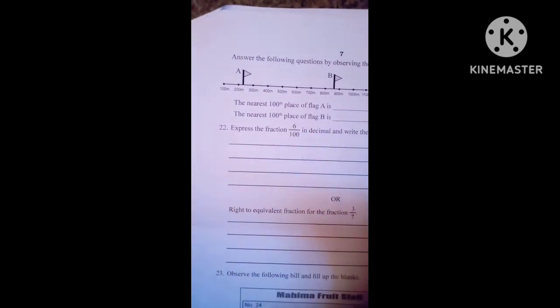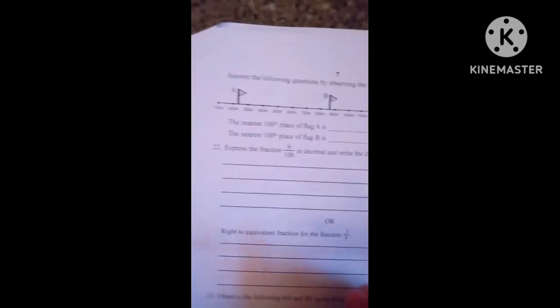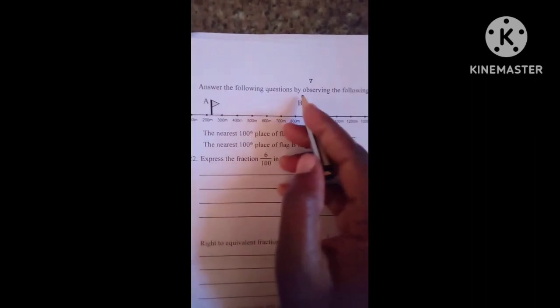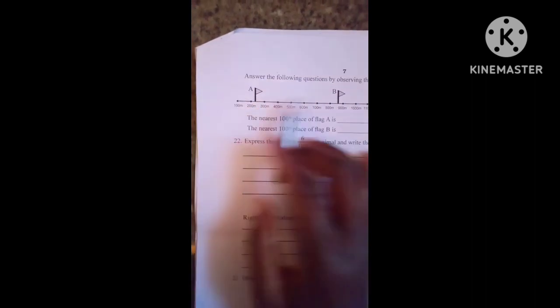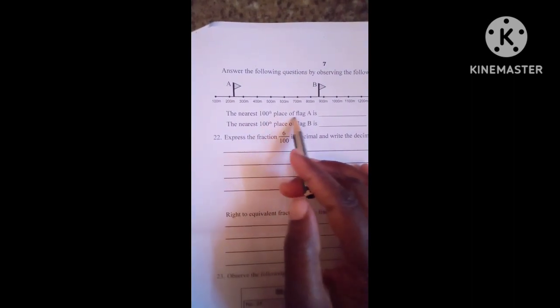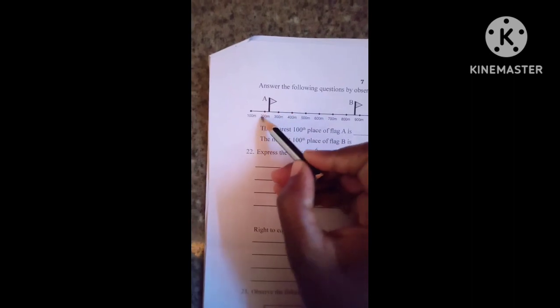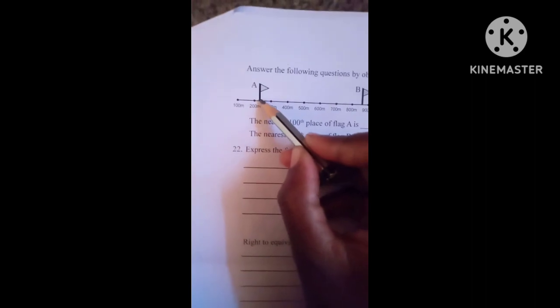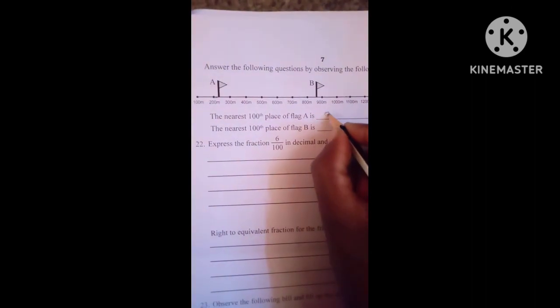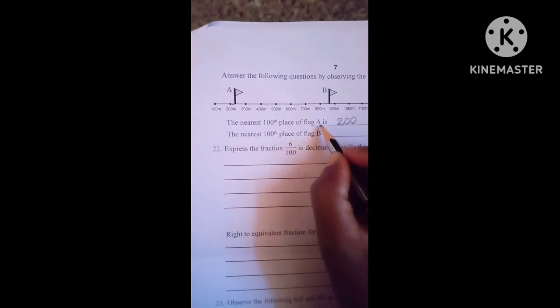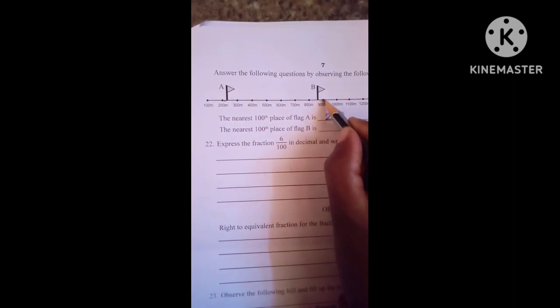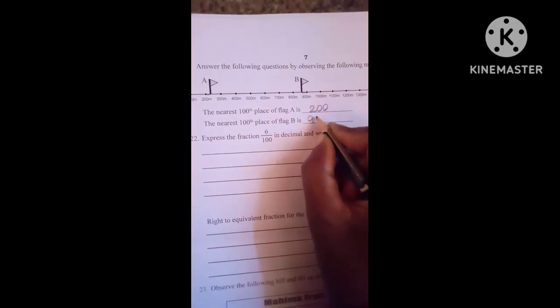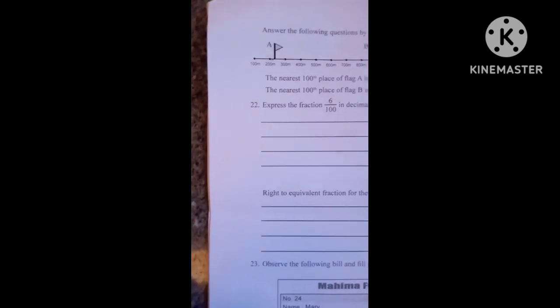See the next question. They have given you can write first question. Next question, answer the following questions by observing the number line. See, they have given one number line. You can observe the questions and write the answer. The nearest hundredth place: Point A is nearest to 200 or 300? You can find easily. This is nearest to 200 only, so you can write here 200. Point B is nearest to 800 and 900. This is nearest to 900 only, so you can write here 900.